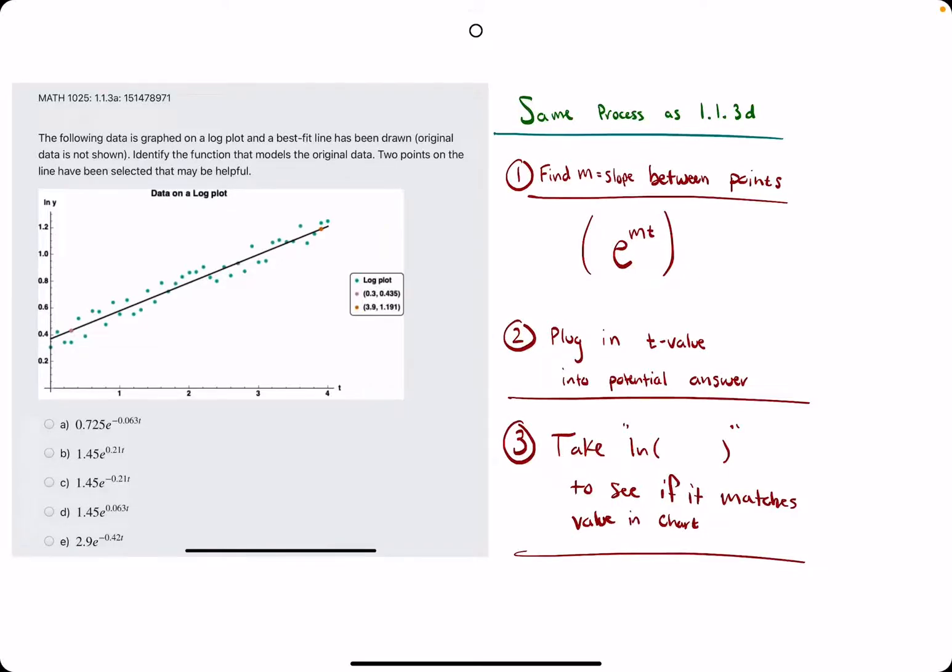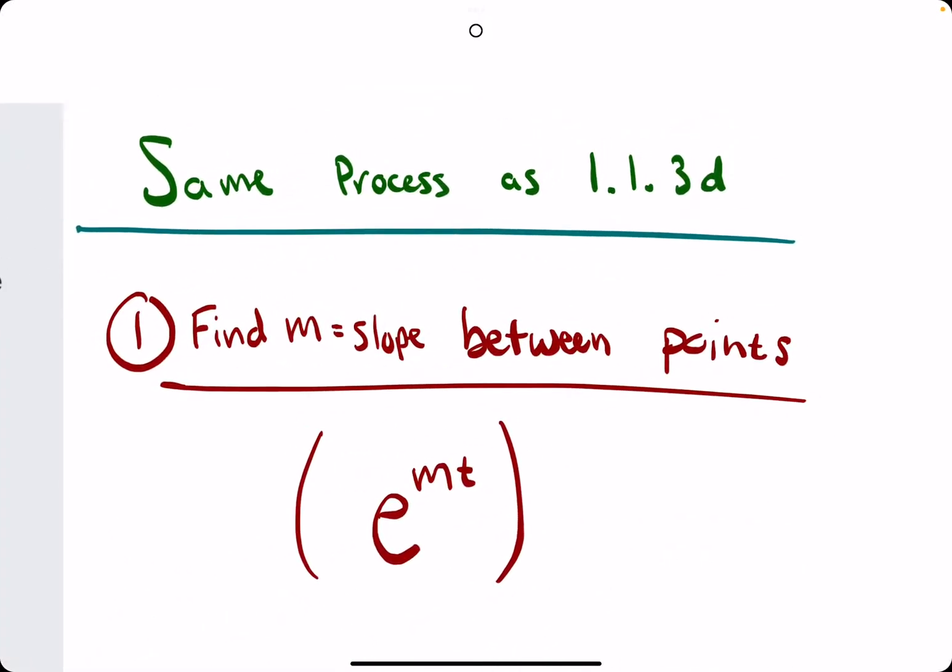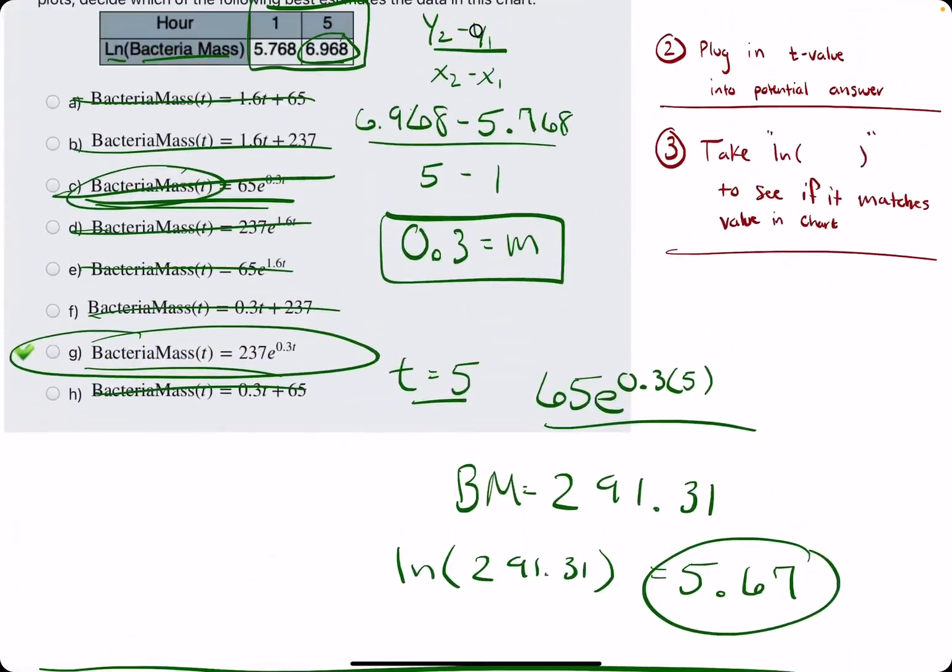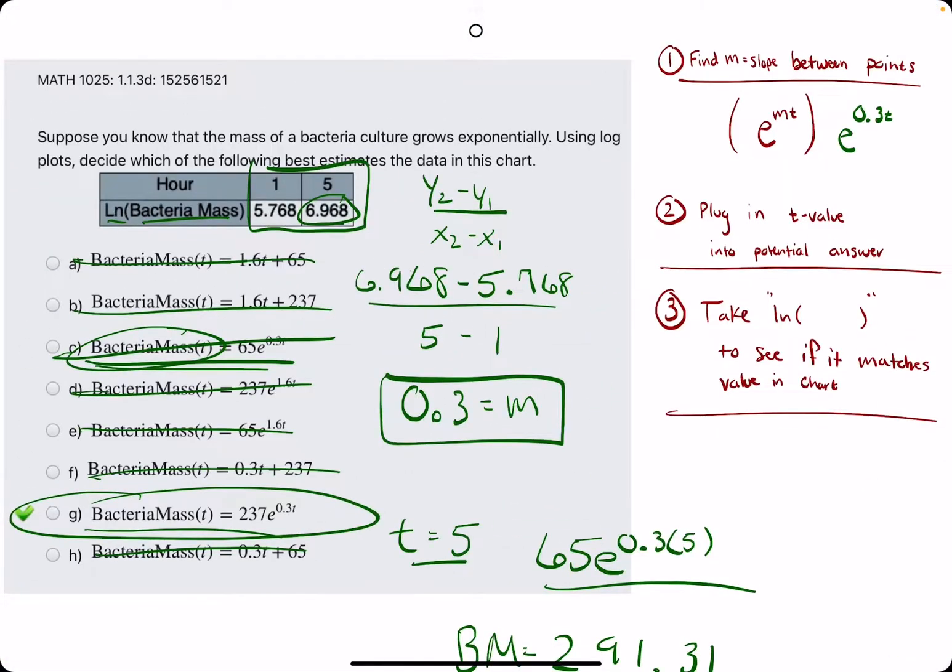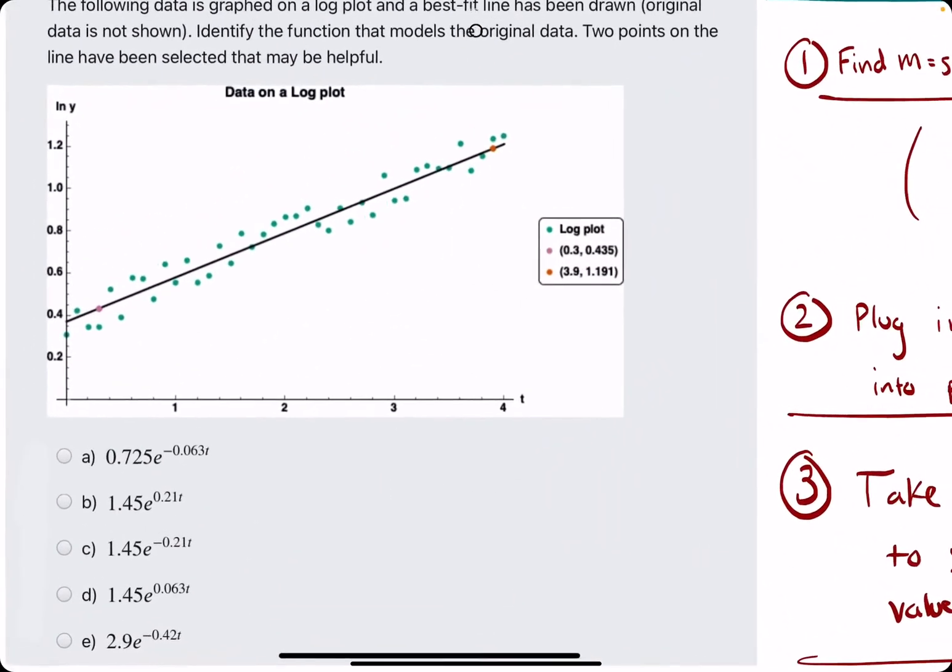Okie dokie. In this problem, we will be using the same process that we used in the 1.1.3d problems where we're given the table of the time and ln of the bacteria mass values.